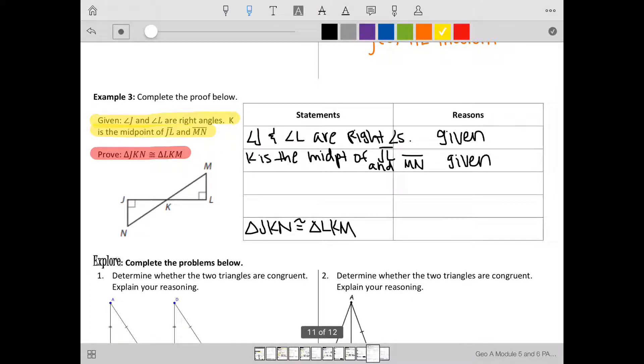To do that, we need to use our given information. If K is the midpoint of JL, well, midpoint means directly in the middle. So this side would have to be the same as this side. So JK would need to be congruent to KL.